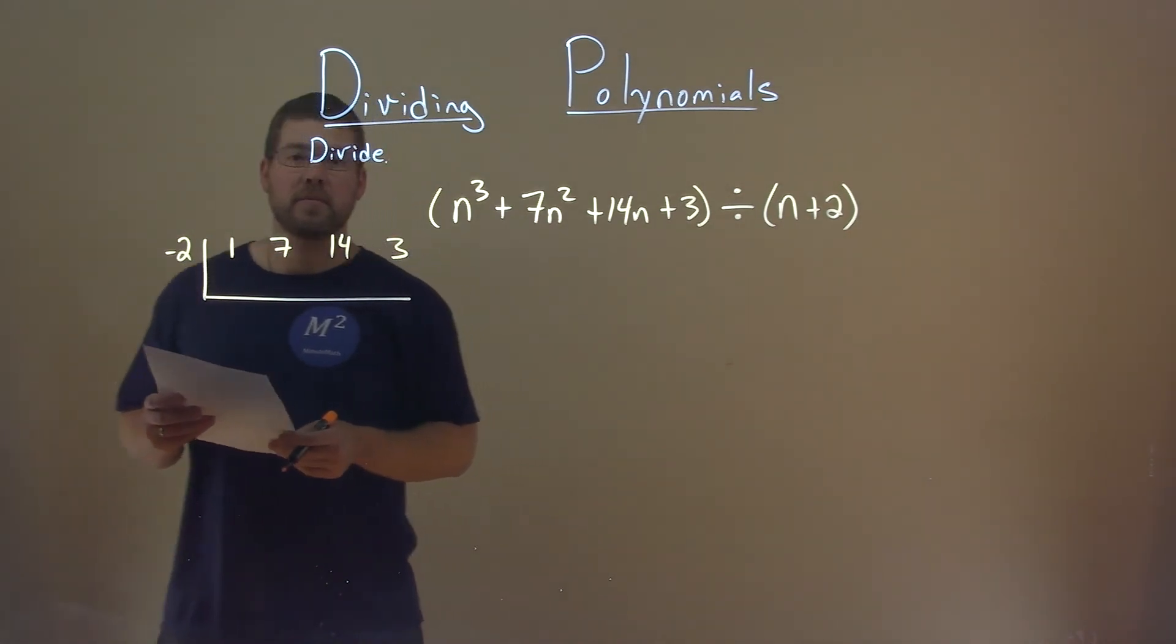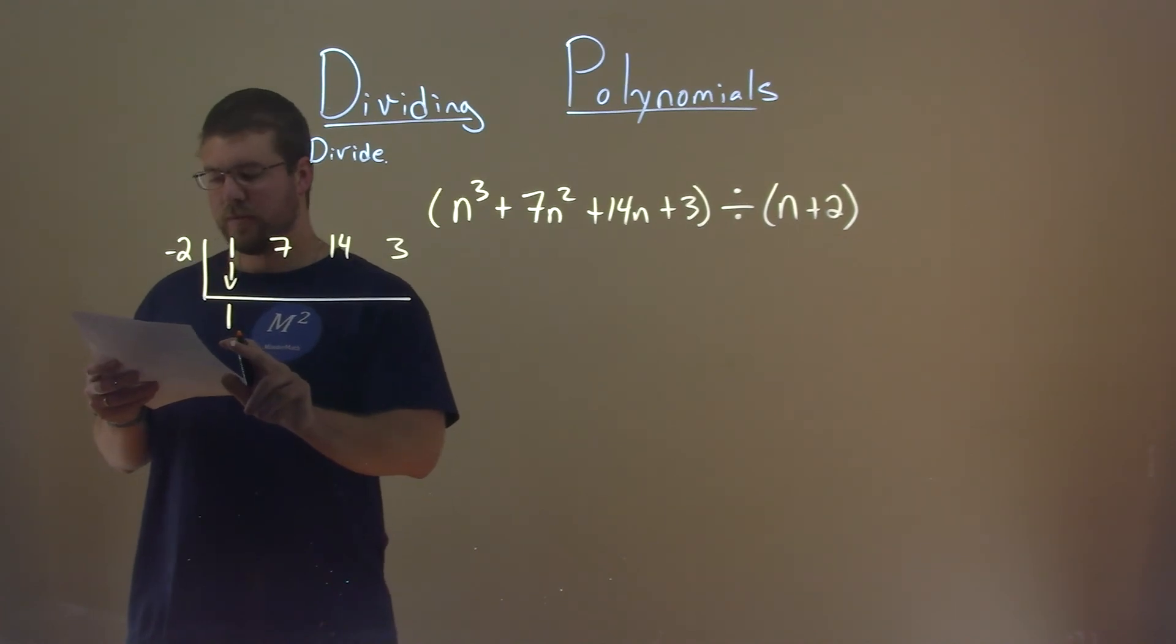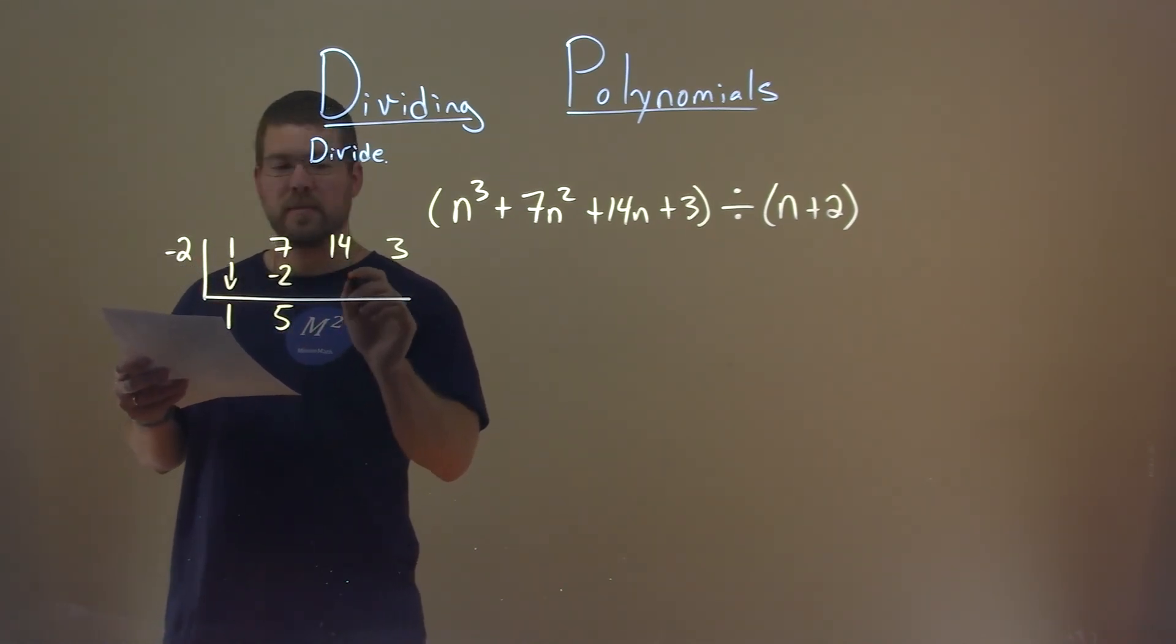Now we're set up to divide synthetically. Bring down a 1. So, negative 2 times 1 is a negative 2. Add the 2. 7 plus a negative 2 is a 5. Negative 2 times 5 is a negative 10.